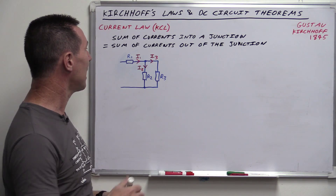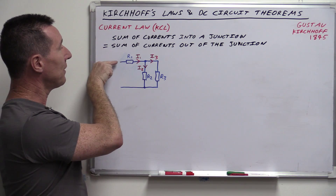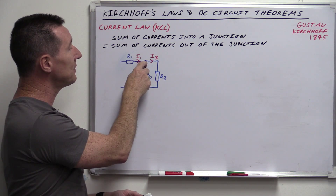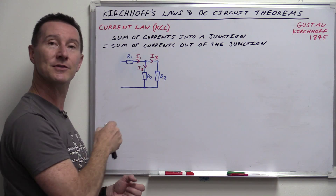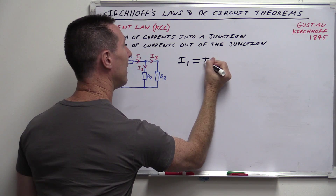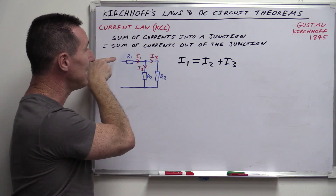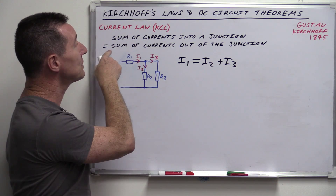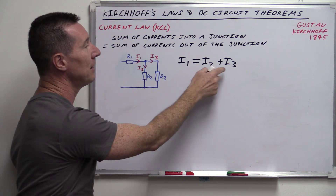We've got a resistor here and two resistors in parallel. We've got current flowing in — I1 here — into this junction. And then we've got two paths coming out: I3 coming out and I2 coming out here. So we can actually write a formula: I1 equals I2 plus I3. The sum of the currents into the junction — in this case we've only got one, but we could have more — equals the sum of the currents out of the junction.